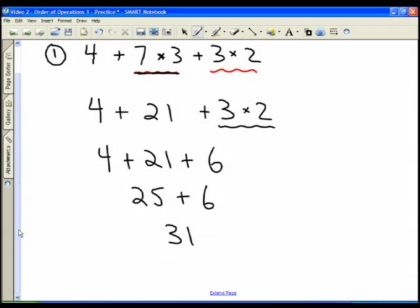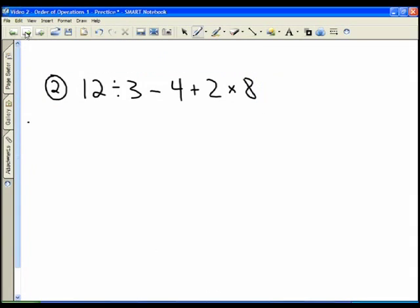So 31 is the correct answer to the first problem. If we take a look at the solution to the second problem, we have 12 divided by 3 minus 4 plus 2 times 8. We need to do our division and multiplication first. 12 divided by 3 is 4, and I only do one step per line.